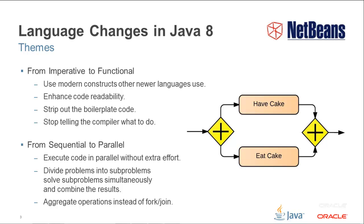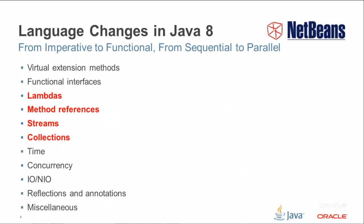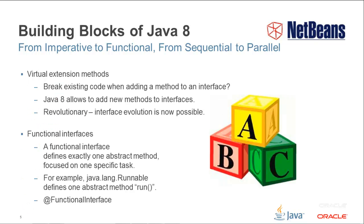In this screencast we're not going to cover all the Java 8 language changes, but just the most important ones — those dealing most directly with functional programming over imperative programming and parallel processing over sequential processing. To make the kind of incisive changes to the language intended for Java 8, some preparatory work had to be done.